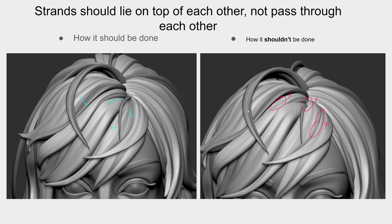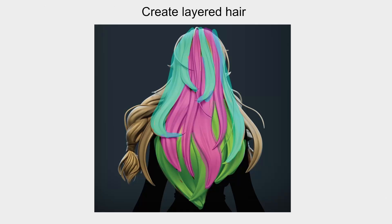Another common mistake is that strands should lie on top of each other, not pass through each other. Very often we hurry and our hair strands intersect illogically into other strands, which reduces the quality of your portfolio work. Finally, it's very important to create layered hair. As you can see on this picture, I have three layers: the one under all the hair, then the second, then the third. Creating hair with this in mind enriches your 3D model and makes it look much more interesting.